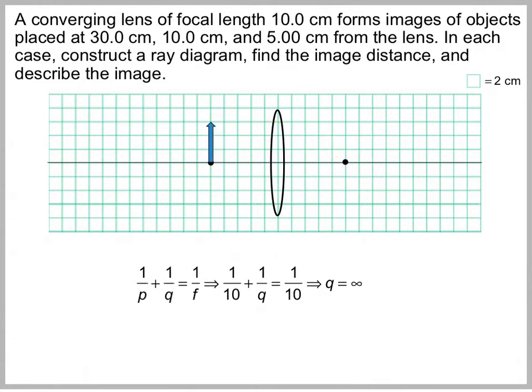For part two, we put the object right at the focal length of 10 centimeters. Applying the lens equation, 1 over Q must equal 0, so Q equals infinity. No image is formed when the object is placed at the focal length of the lens.